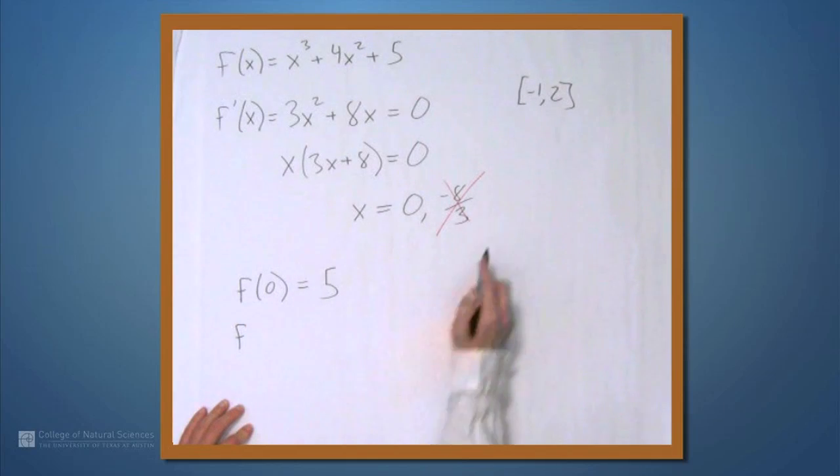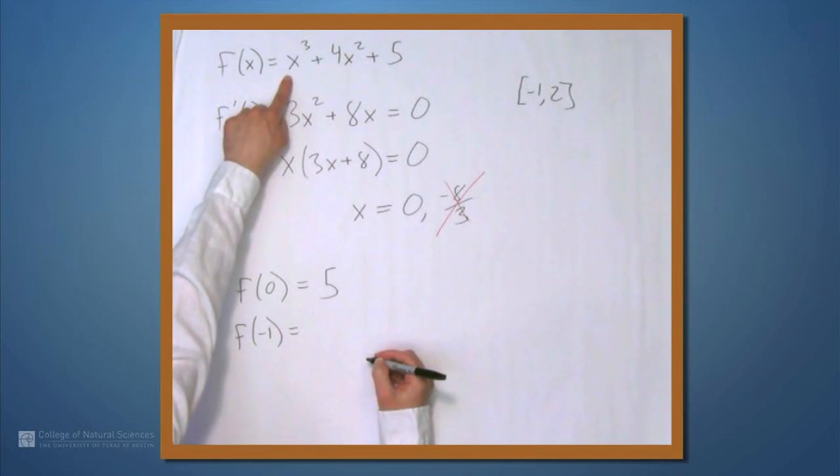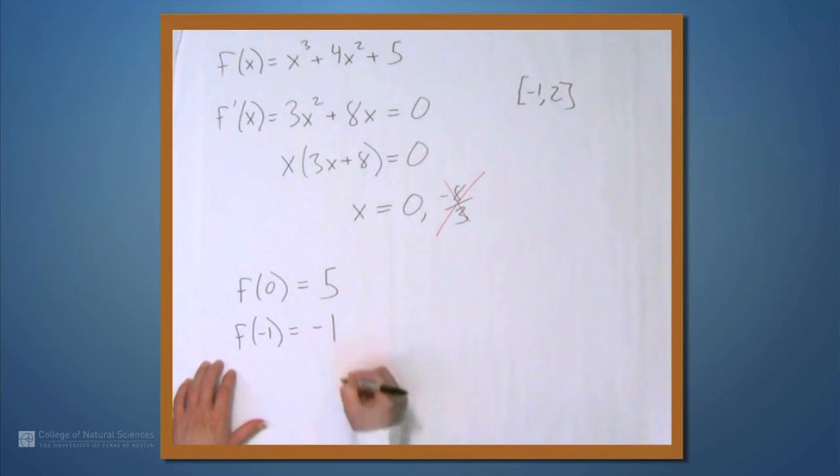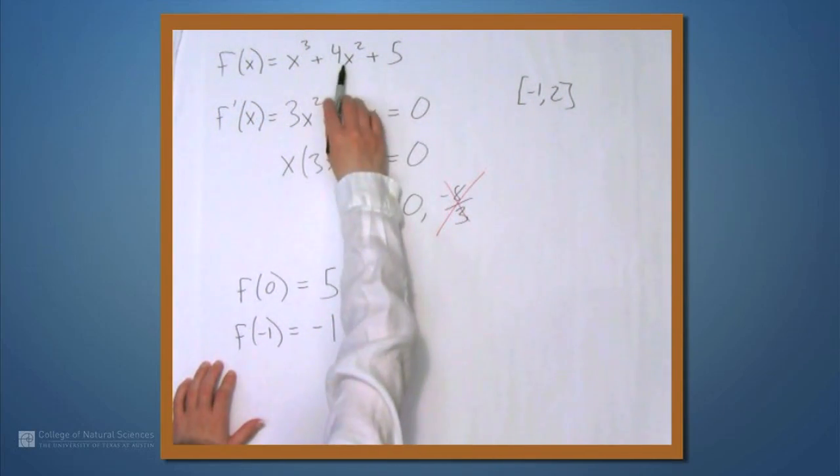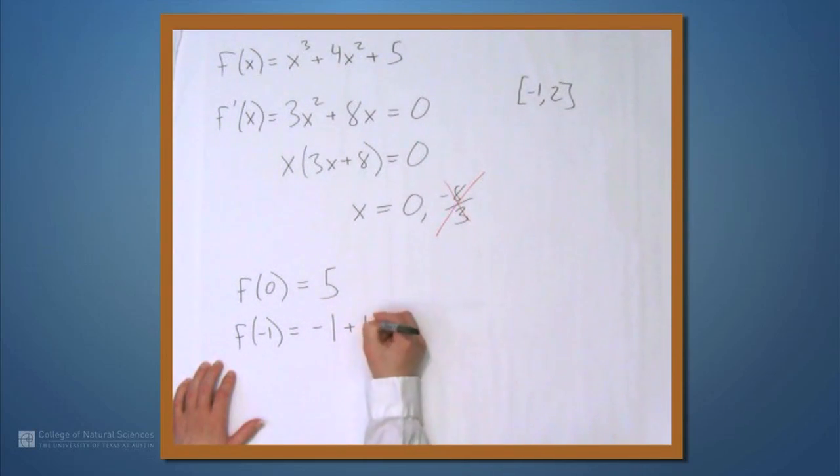f of the left endpoint, negative 1, is what? Negative 1 cubed is negative 1. 4 times negative 1 squared is 4 times 1, so that's plus 4, and plus 5, this is 8.